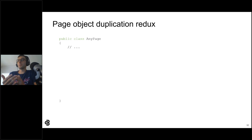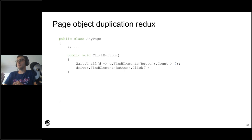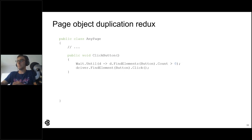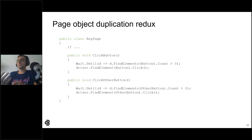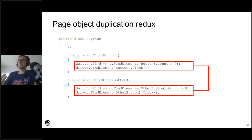Unfortunately, page objects themselves suffer problems with duplication in their interaction methods. Suppose a page object needs a method to click an element — wait for the element to exist, then click it. But what about clicking another element? A second click method is needed, and as you'll notice, the code for both methods is essentially the same. This is copy-pasta, and it happens all the time in page objects. I've personally seen page objects grow to thousands of lines due to duplicative methods like this.